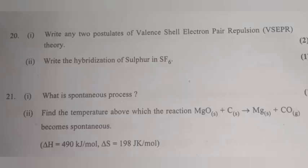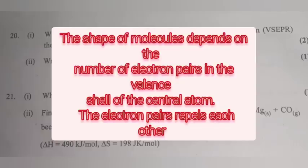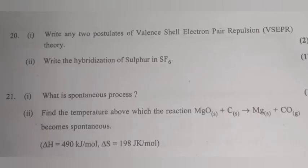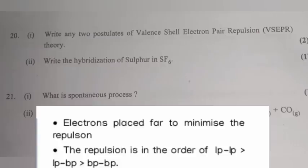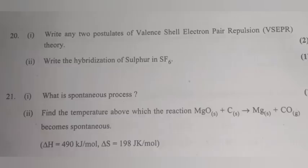Question 20.1: Write any two postulates of valence shell electron pair repulsion (VSEPR) theory. Answer: 1. The shape of molecules depends on the number of electron pairs in the valence shell of the central atom. 2. The electron pairs repel each other. 3. Electrons are placed far apart to minimize repulsion. 4. The repulsion is in the order: lone pair–lone pair > lone pair–bond pair > bond pair–bond pair.